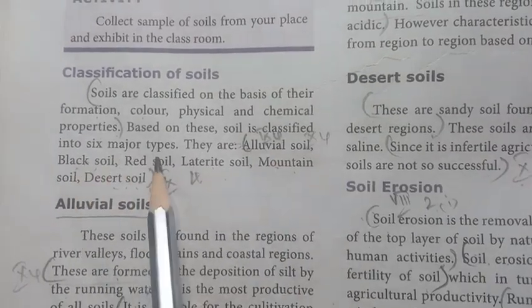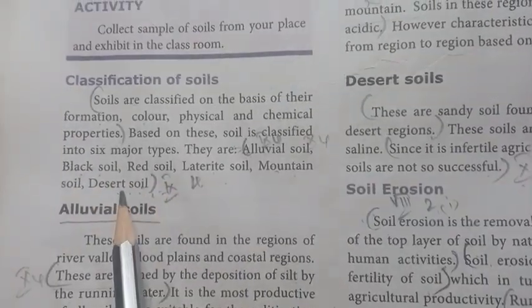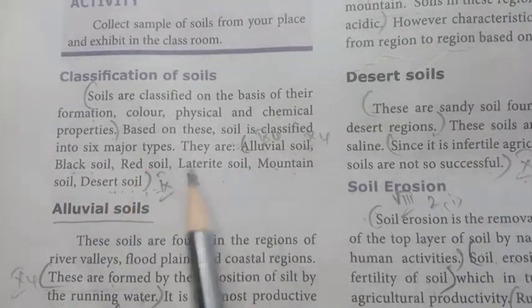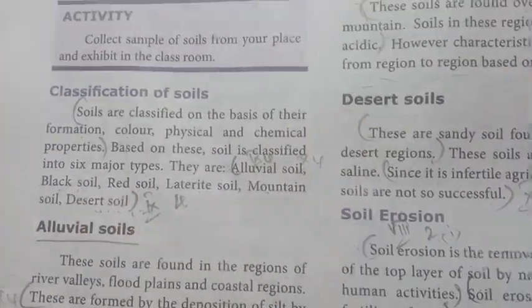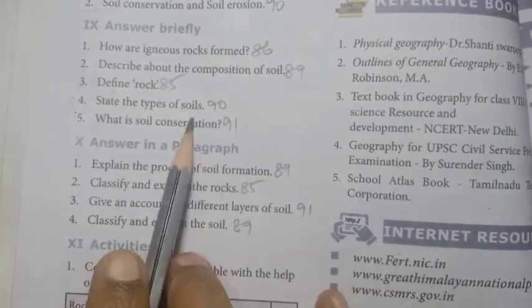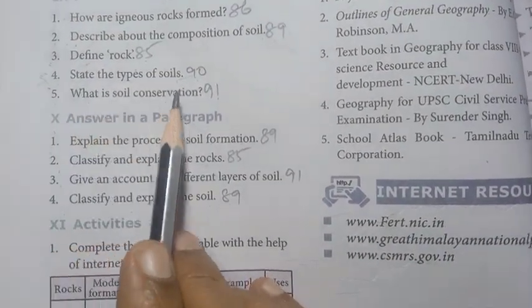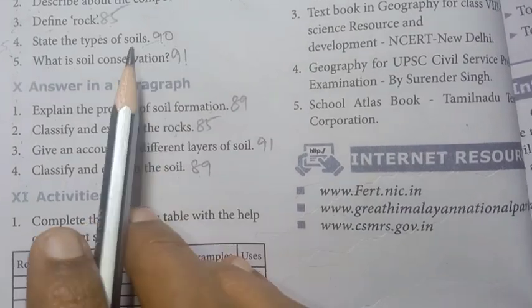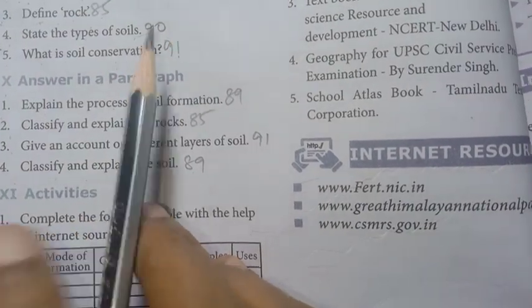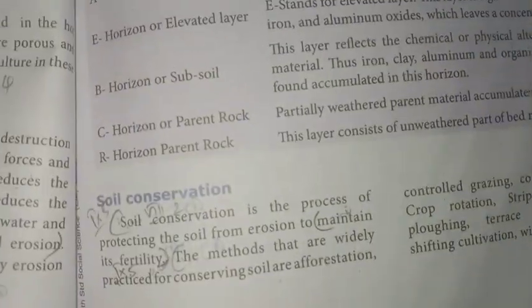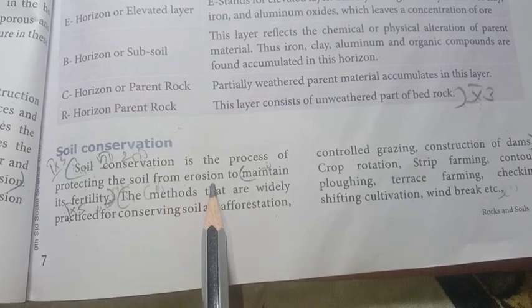There are six types of soil: alluvial, black, red, laterite, mountain, and desert. This is an important topic — the types of soil.